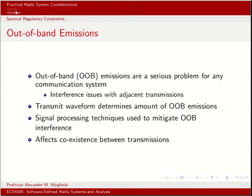Two key issues with spectrum are out-of-band (OOB) emissions and the hidden node problem. OOB is a very serious issue: you're given a specific band to operate in, but if you don't design your communication system appropriately, you produce electromagnetic emissions outside your allocated frequency band and interfere with everyone around you. There are a variety of OOB mitigation techniques that can minimize this interference.